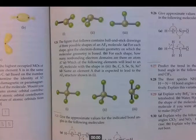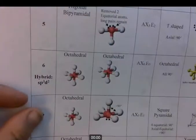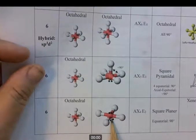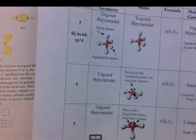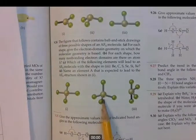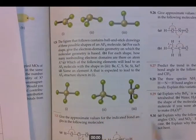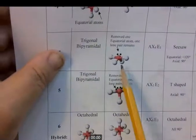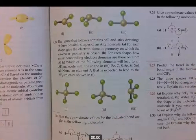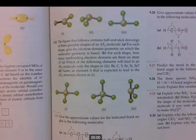The problem says the figures that follow contain ball and stick drawings of three possible shapes of an AF4 molecule. So AF4 means it's some generic central atom, but they're telling you the outside terminal atoms are all fluorines. For each shape, give the electron domain geometry on which the molecular geometry is based.